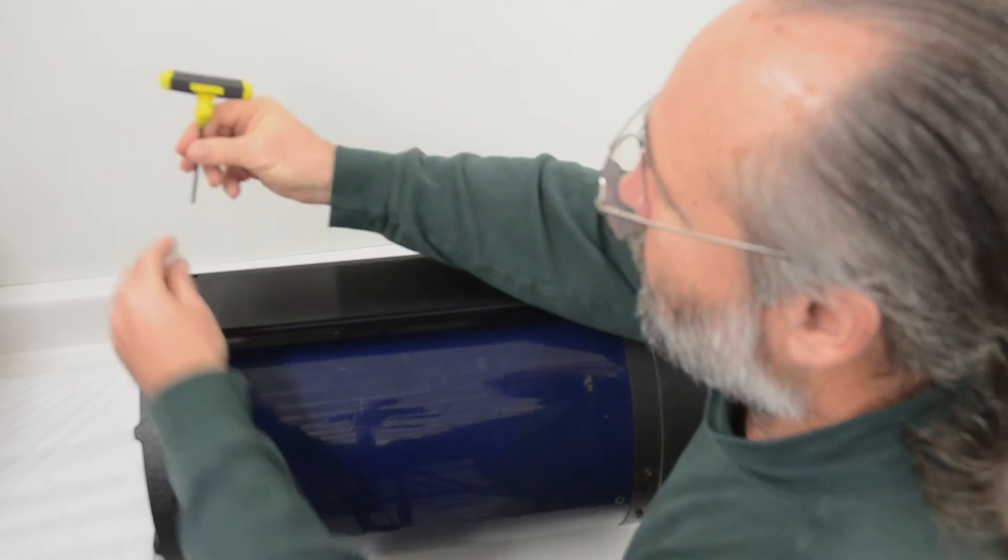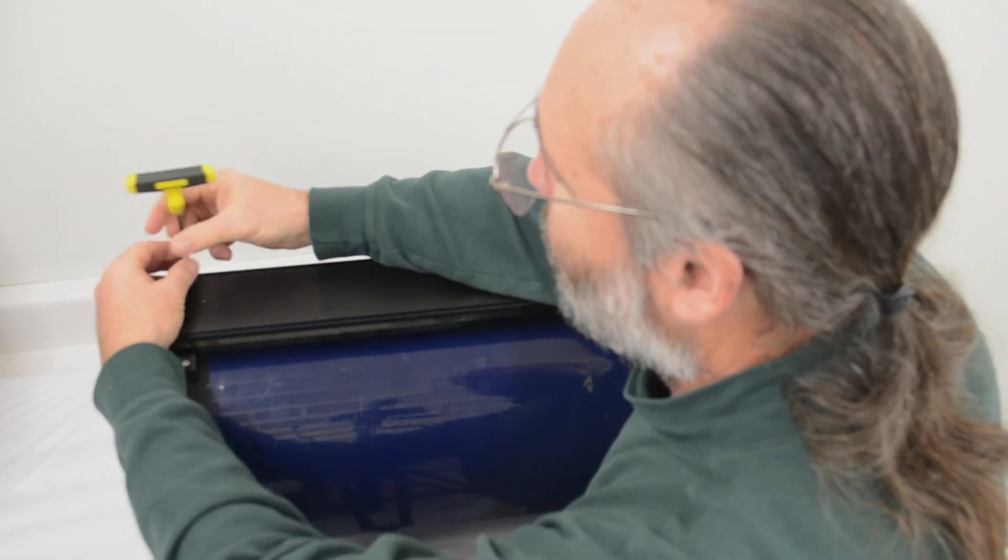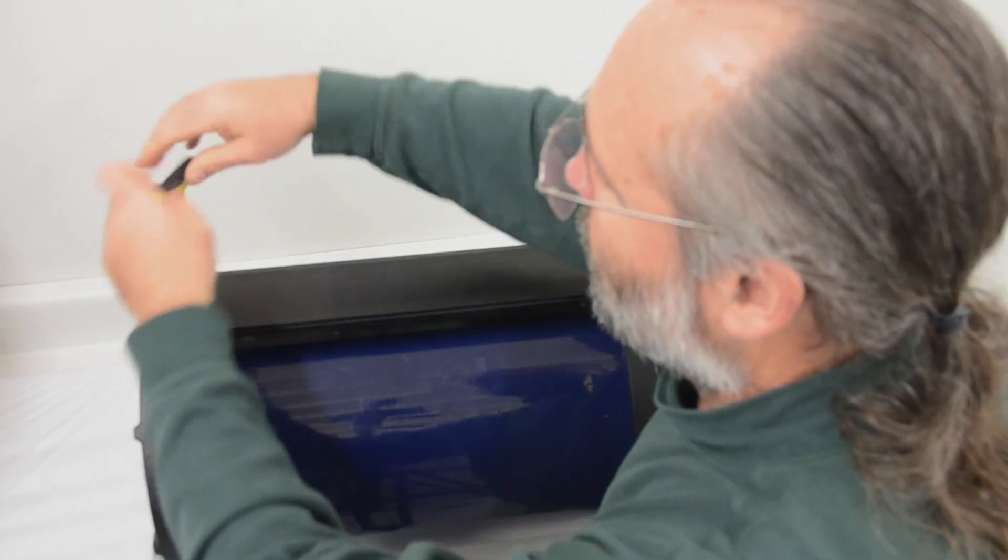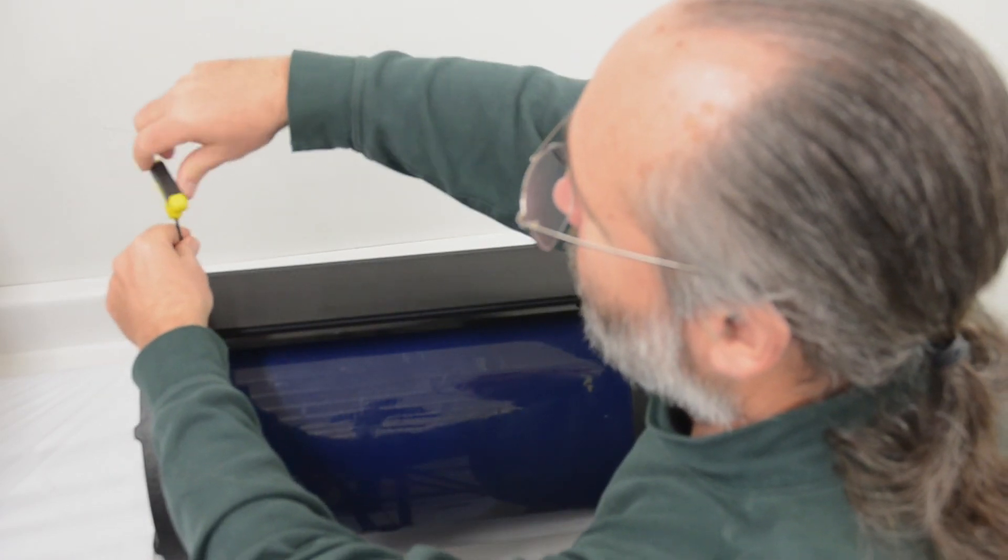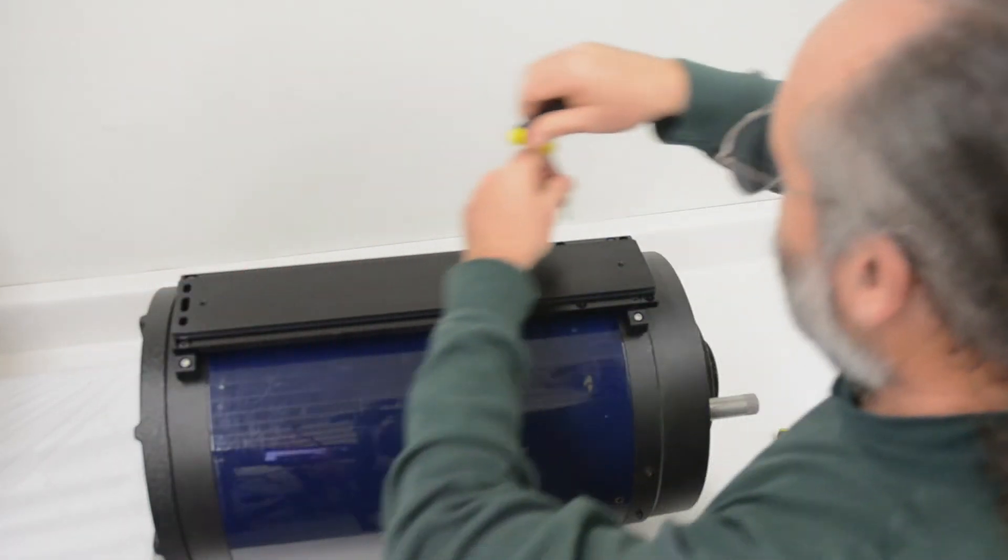Again, note that you can mount your dovetail on either the top or the bottom of the OTA. Mount the dovetail on the bottom of the OTA if you want to attach it to the saddle plate on your telescope mount. Mount the dovetail to the top of the OTA, like I'm doing here, if you want to use the dovetail to hold accessories.